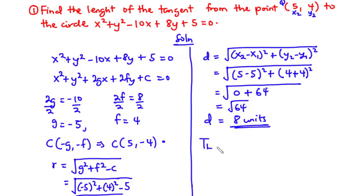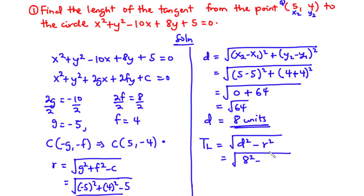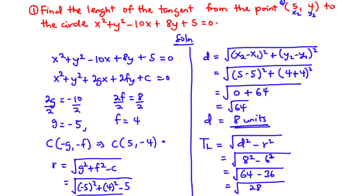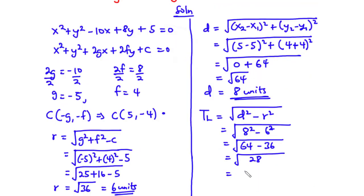Using the tangent length formula: length = √(D² − R²) = √(8² − 6²) = √(64 − 36) = √28 = 2√7. So the length of the tangent from the point (5, 4) to the circle is 2√7.